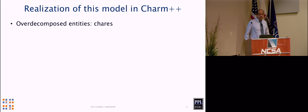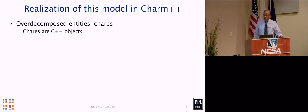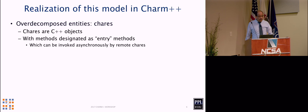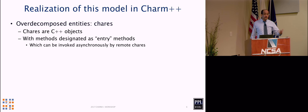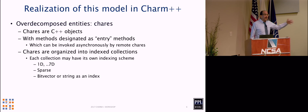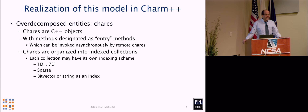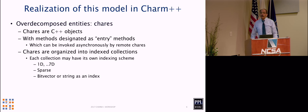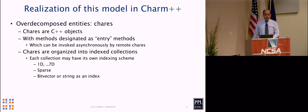CHARM++ is a particular realization of this model where these over-decomposed entities are C++ objects called chares. They have methods that can be invoked remotely, called entry methods — that's the defining feature of what makes a C++ object a chare. These chares can be organized into collections — for example, a one-dimensional or three-dimensional collection — and individual chares are named by their index. You might have a one-dimensional sparse index going from zero to a billion, with only about 10,000 actually existing, or a dense one-to-million. You might have millions of objects running on thousands of cores.